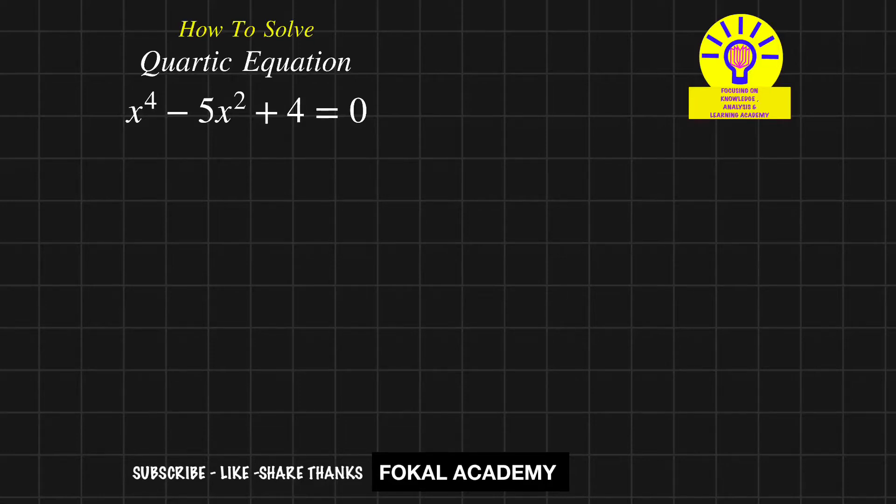In this problem, we'll solve the quartic equation x^4 - 5x^2 + 4 = 0. In this equation, the x^3 term and x term have zero coefficients.